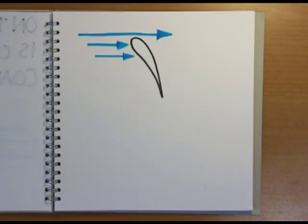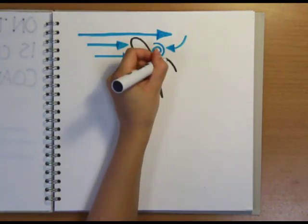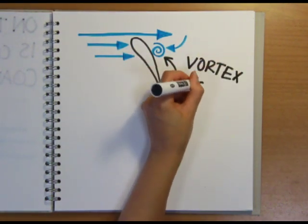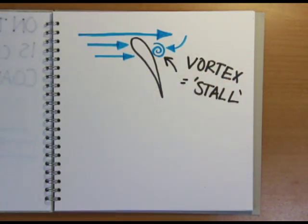If the wing is at too high an angle though, the air can detach further up, and the vacuum created can pull in air from the back, creating a vortex. This is known as a stall, and it creates a lot of drag and reduces the lift, which can in fact cause the plane to crash.